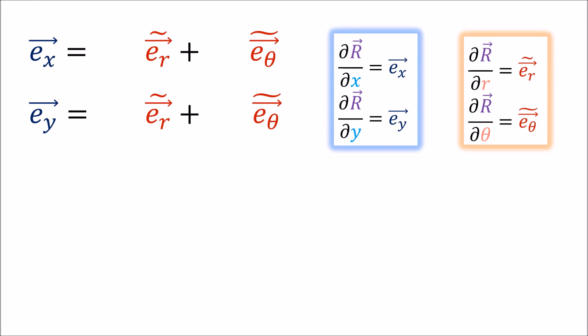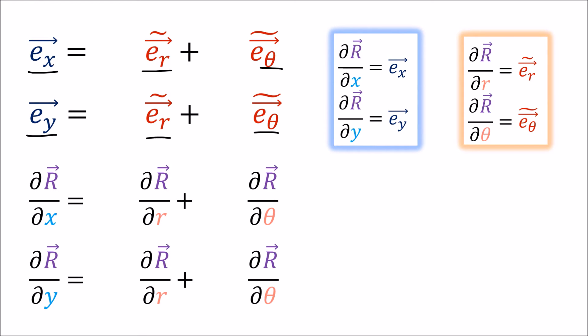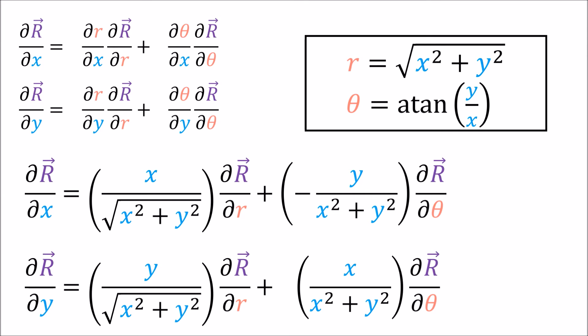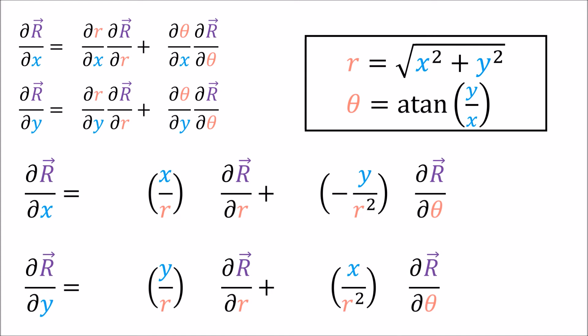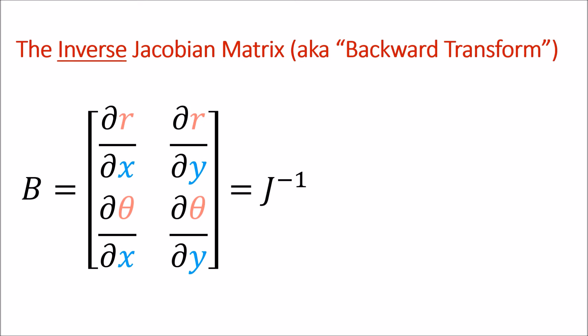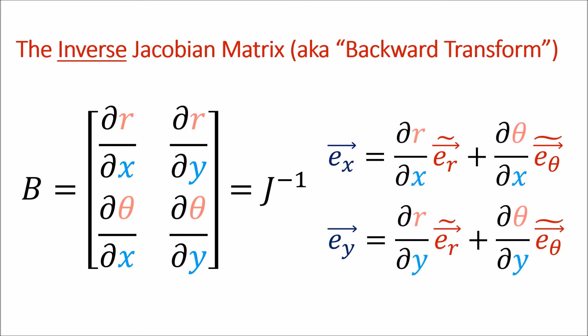We can also go in the reverse direction and build up the Cartesian basis vectors out of the polar basis vectors using the same reasoning. We just write out the basis vectors as partial derivatives and use the multivariable chain rule to get these equations. I'm not going to go through all the work of calculating these derivatives — you can calculate the derivative of the square root using the chain rule, and I actually had to look up the derivative of arctan in a table. But the coefficients we get from these partial derivatives, when simplified and rewritten, give us our backward transform B, also known as the inverse Jacobian matrix, denoted by J with a −1 exponent. This matrix gives us the coefficients needed to build the Cartesian basis vectors out of the polar basis vectors.